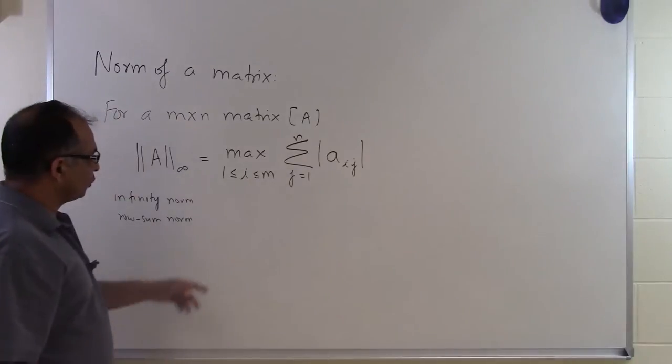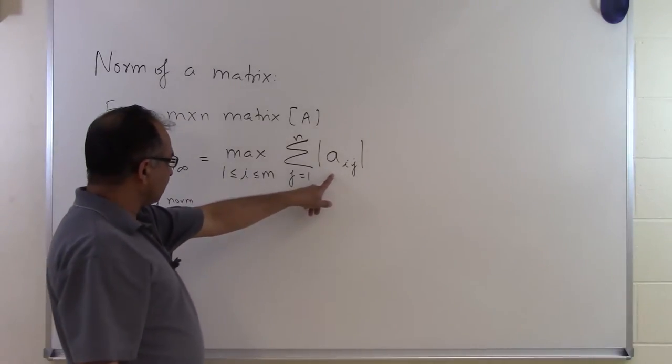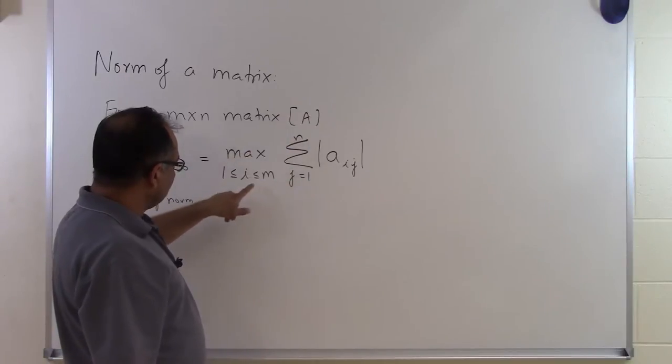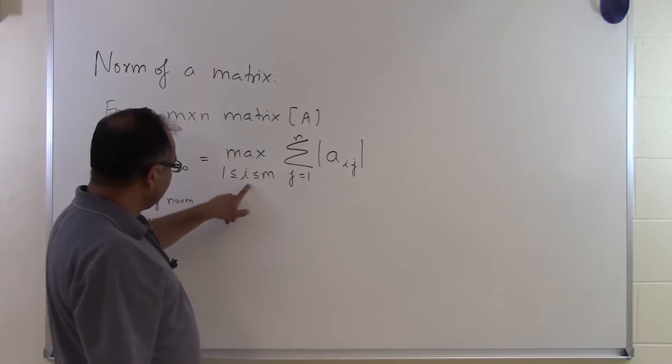So what this basically means is that you are going to find this sum going from the first column to the nth column for each of the rows.